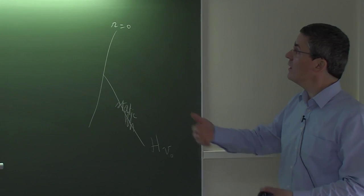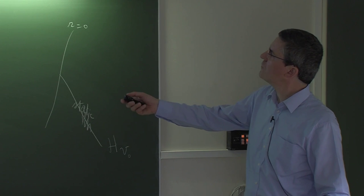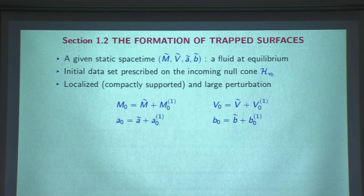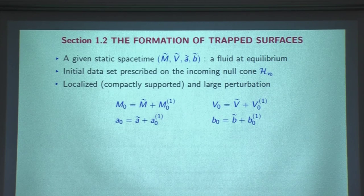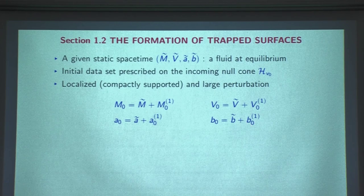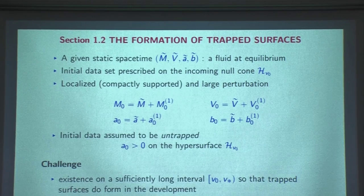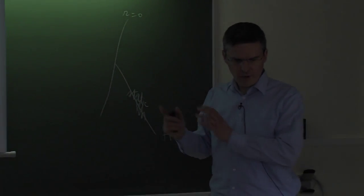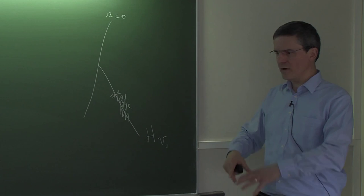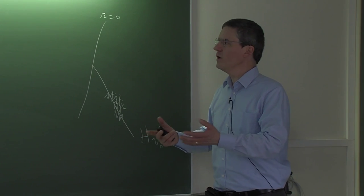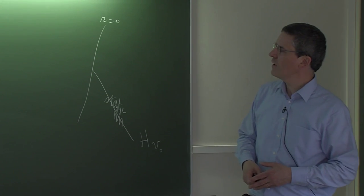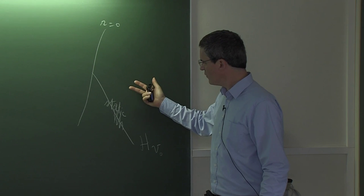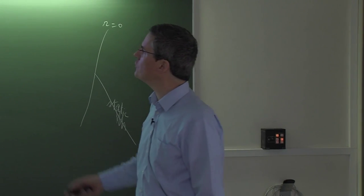The initial data M0 is M tilde plus the short pulse quantity, and similarly for V0, A0, B0. I need to tell you how M01, V01, etc. are defined. The initial data is assumed to be untrapped, so A0 will be positive on this hypersurface. The challenge is to show that the solution exists on a sufficiently long interval V0 to V star so that trapped surfaces will form. We need to monitor the evolution and the sign of the metric coefficient — the spacetimes are constructed through a sequence of approximate solutions, so we must monitor the sign and evolution of the short pulse on these approximate solutions uniformly with respect to the approximation parameter.